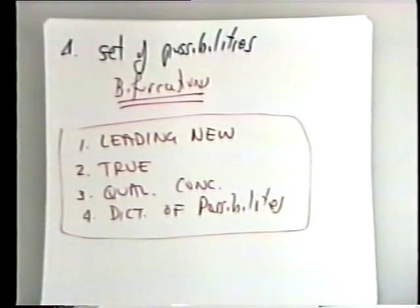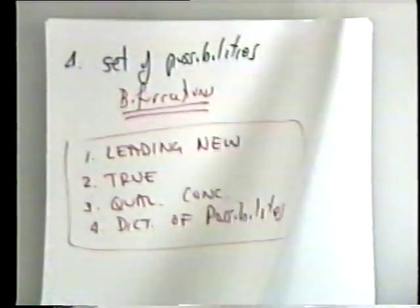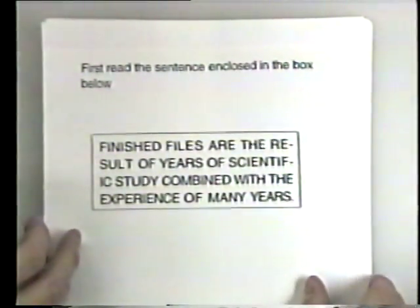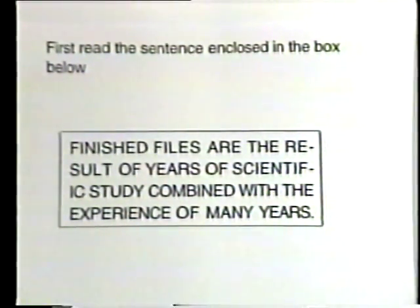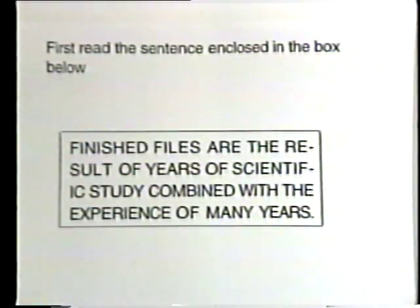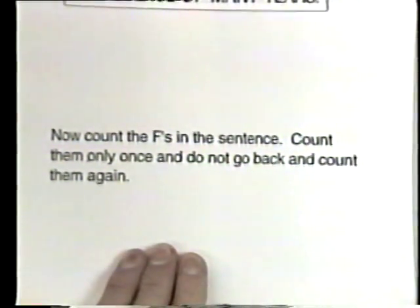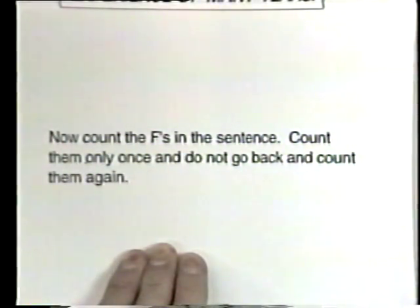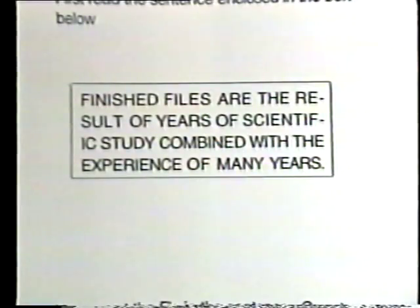Now let me return to this concept of paradigms. Kuhn's ideas are very important for understanding what's really going on in science. What I'd like you to do is read the sentence in the enclosed box and count the number of F's in this sentence. Count them only once and do not go back and count them again. So go ahead — read the sentence to yourself and write down the number of F's.